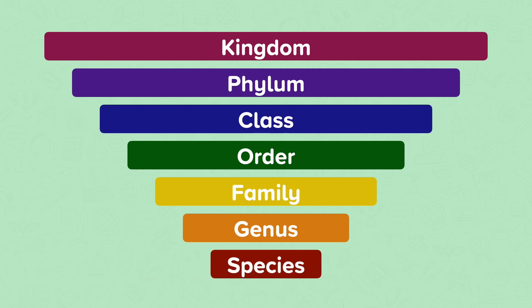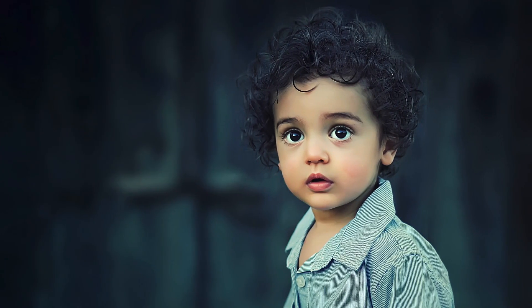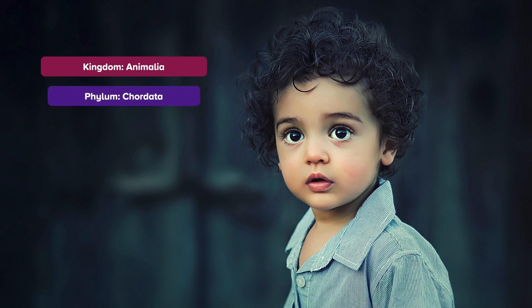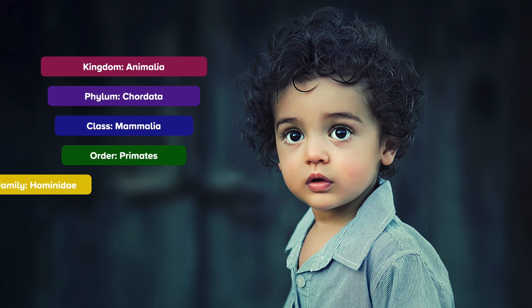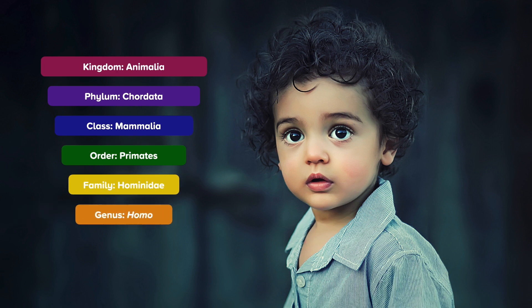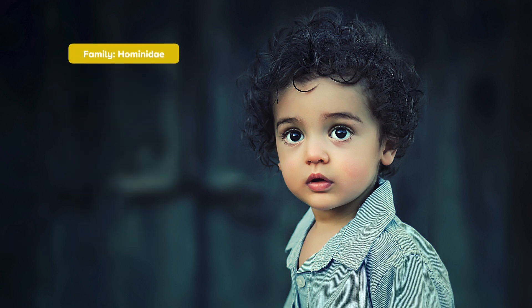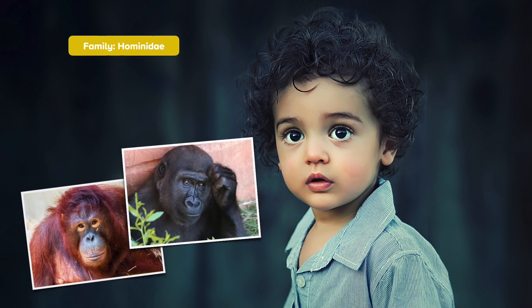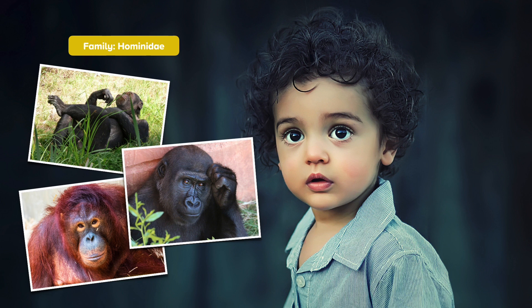Let's look at an example. Here is a human. Under the Linnaean system, humans are classified as follows. Other members of the Hominidae family include gorillas, orangutans, chimpanzees, and bonobos.